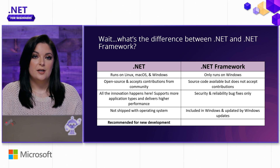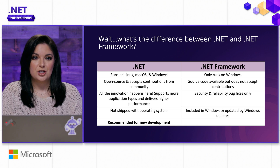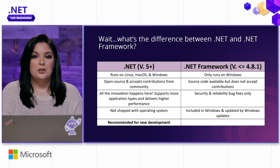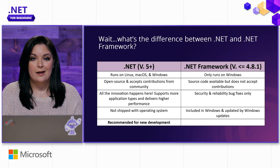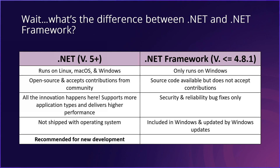It can be tricky to understand which one you're downloading, so here's a cheat sheet. When you see version 4.8.1 or lower, that is .NET Framework, and it should only be downloaded if the project you're working on exclusively calls for it. If you want modern .NET, you're looking for any version 5 and above. We just had .NET 8 released, so we highly recommend you install and work with .NET 8.